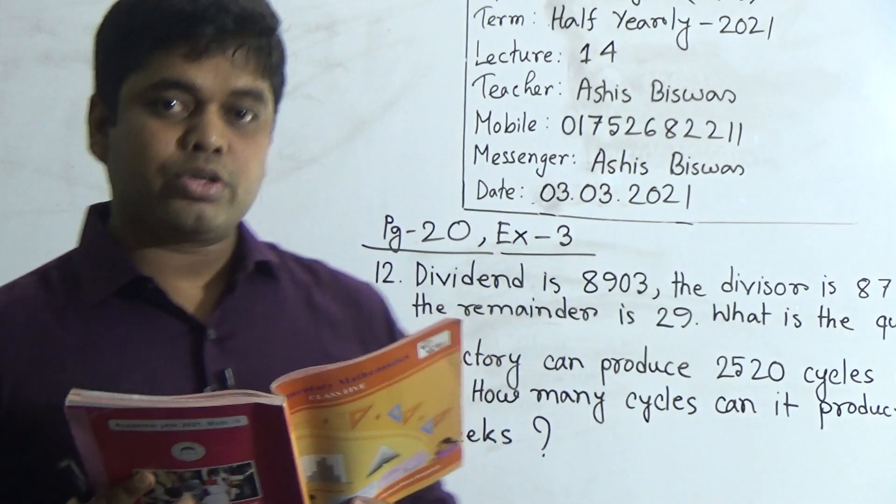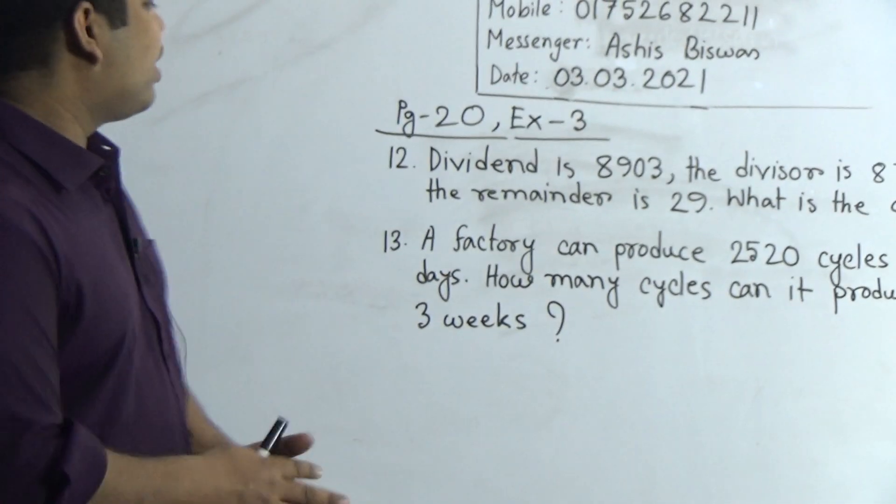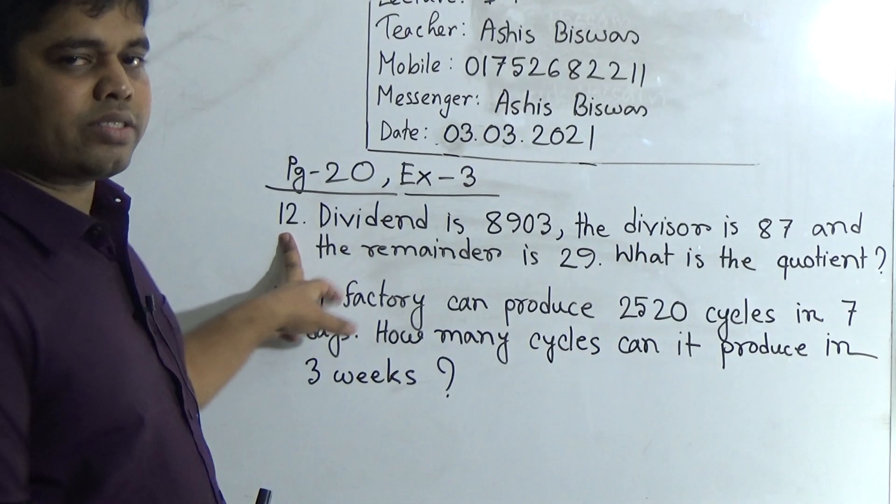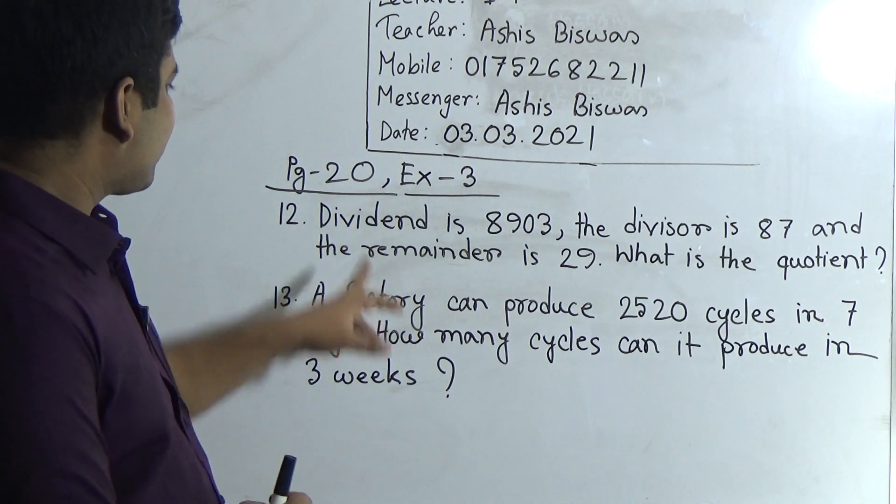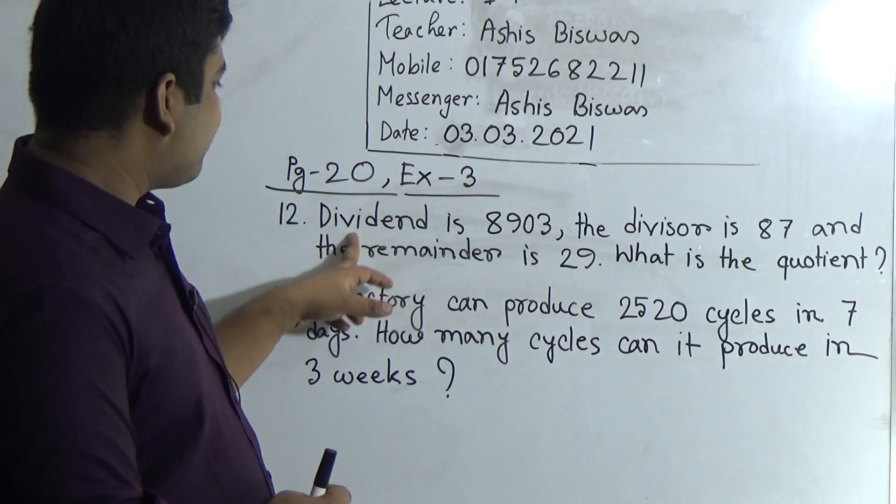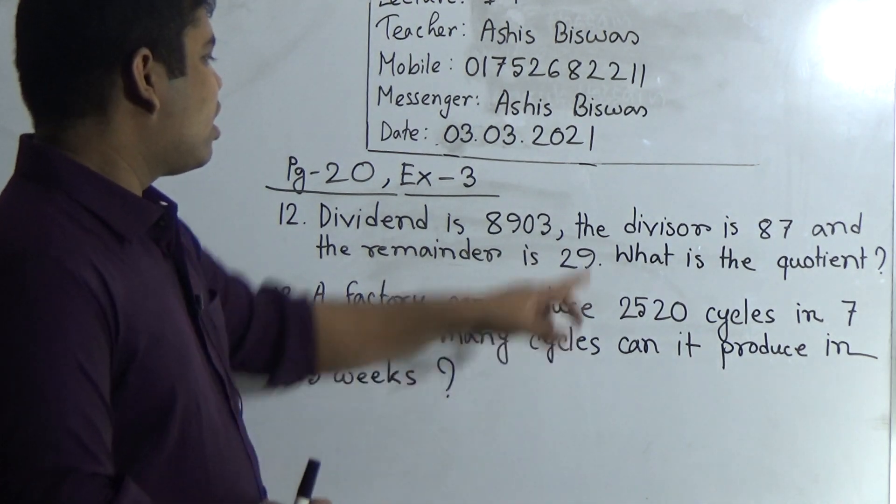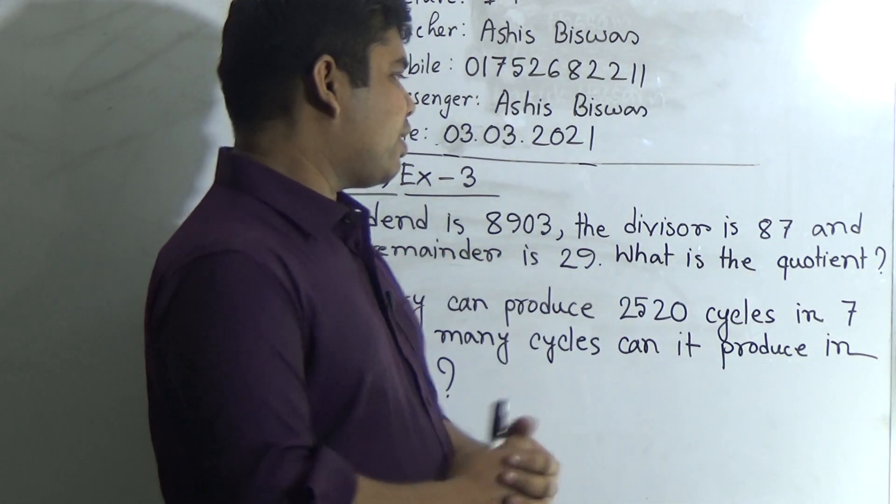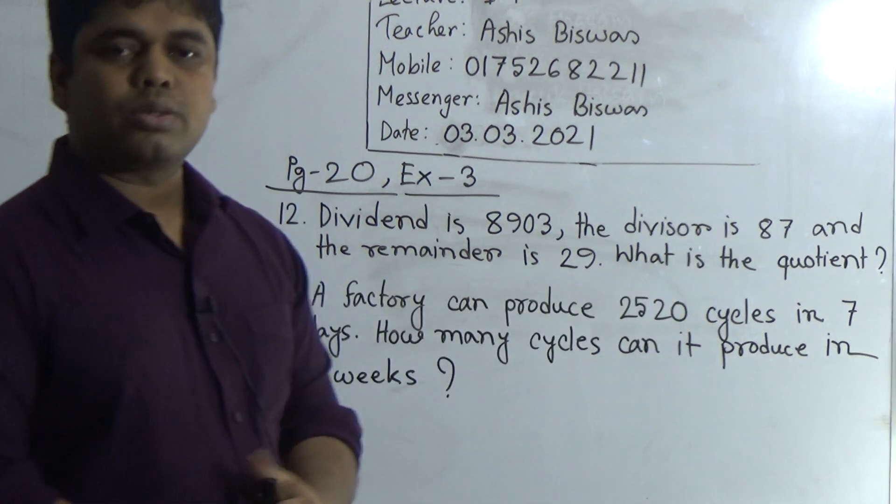I hope you have this book. Open page number 20. From page number 20 we shall solve question number 12 and 13. I have already written both of the questions on the board. So we solve question number 12 first. In order to solve this math, at first we read the question. Please notice. Dividend is 8903, the divisor is 87, and the remainder is 29. What is the quotient?